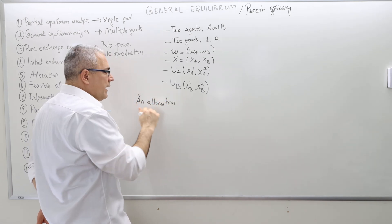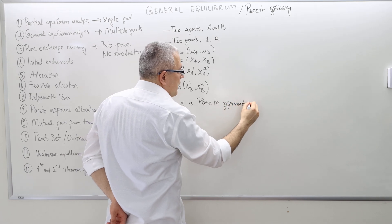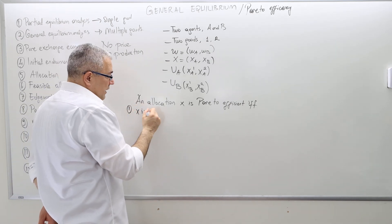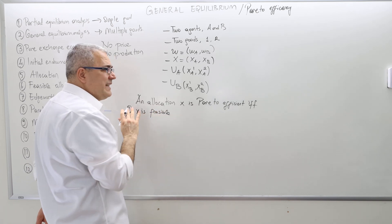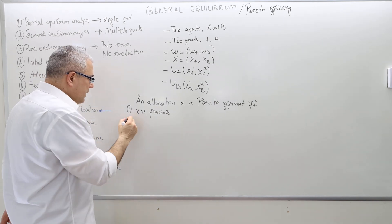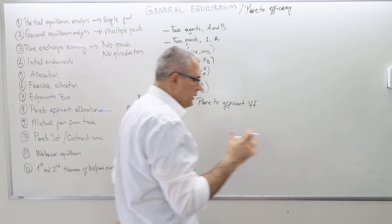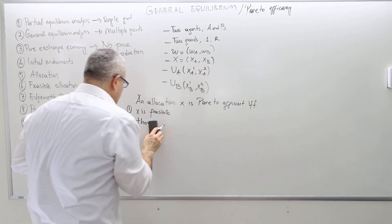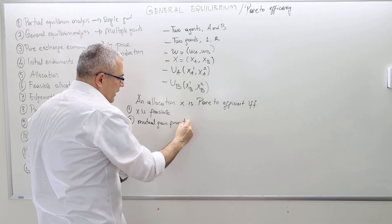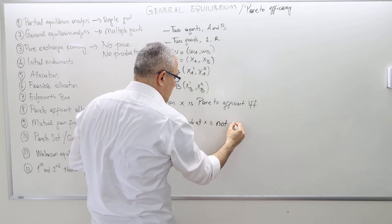So let me formally define: an allocation x is Pareto efficient if and only if — one, x is feasible. An allocation has to be feasible first, but that's not enough. Two, mutual gain from trade at x is not possible.